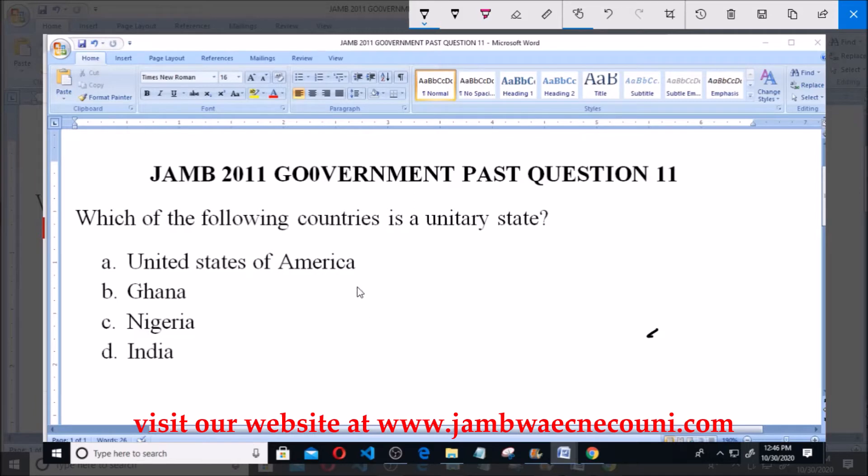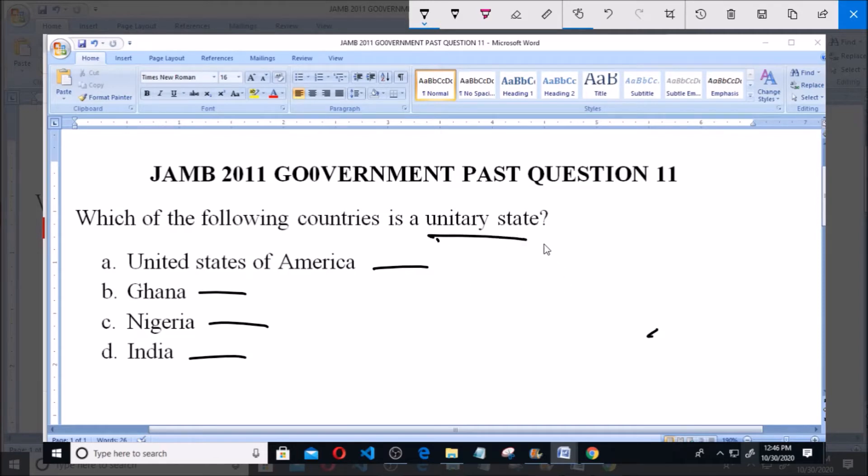Which of the following countries is a unitary state? Option A: United States of America. Option B: Ghana. Option C: Nigeria. Option D: India. I want to talk about unitary states. One of the properties of a unitary state...